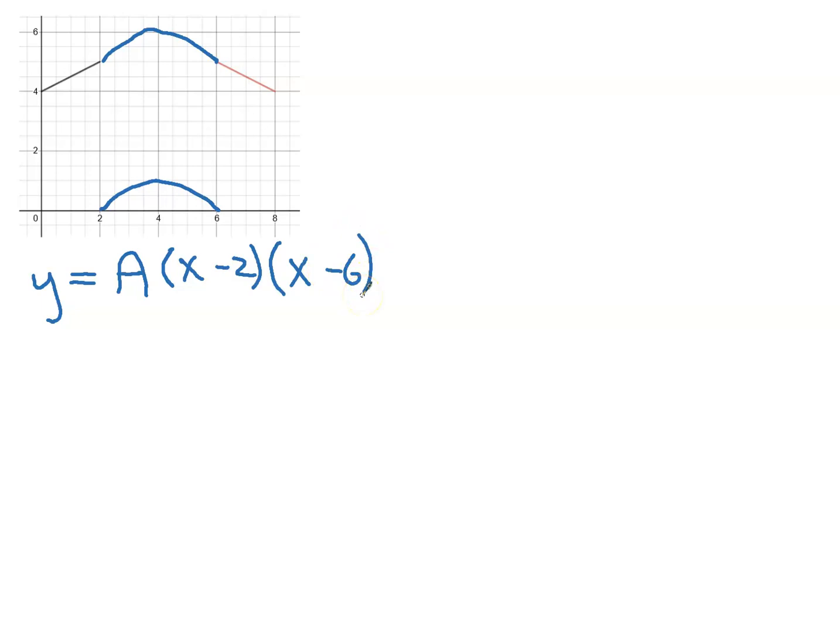Okay, so what I have to do now is find what A is. I've got x and y in the equation, but I happen to know another point on that graph, which is x is 4, y is 1. So I can just write 1 equals A brackets 4 take 2, so all I'm doing is substituting, and 4 take 6.